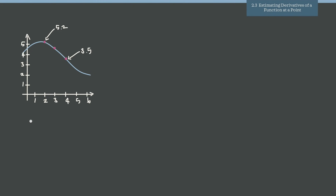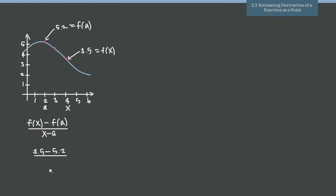Plugging into the difference quotient — f(x) − f(a) over x − a — we get 3.5 − 5.2 over 4 − 2, which gives −1.7 / 2 = −0.85. A quick double-check is to draw a tangent line approximation at that point; a slope of about −0.85 looks consistent with the graph. So our estimate for the derivative at x = 3 is −0.85.